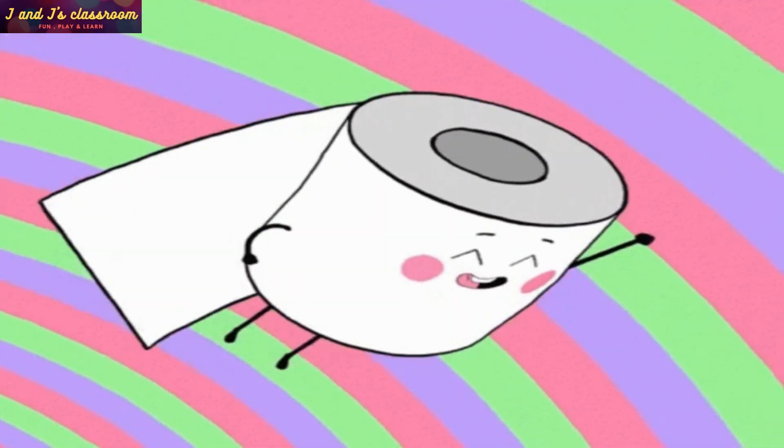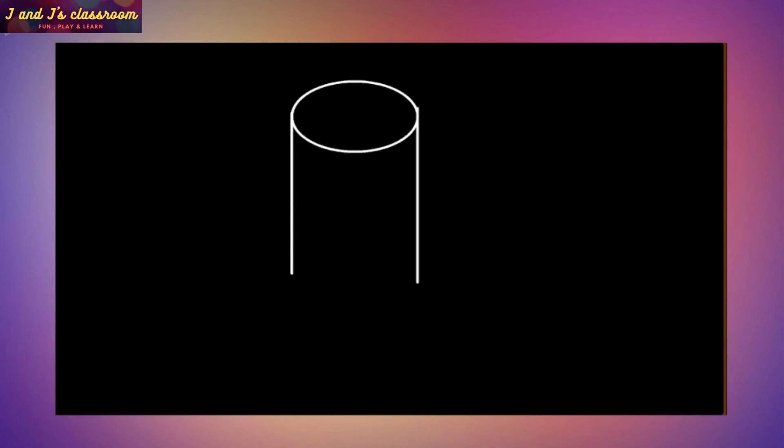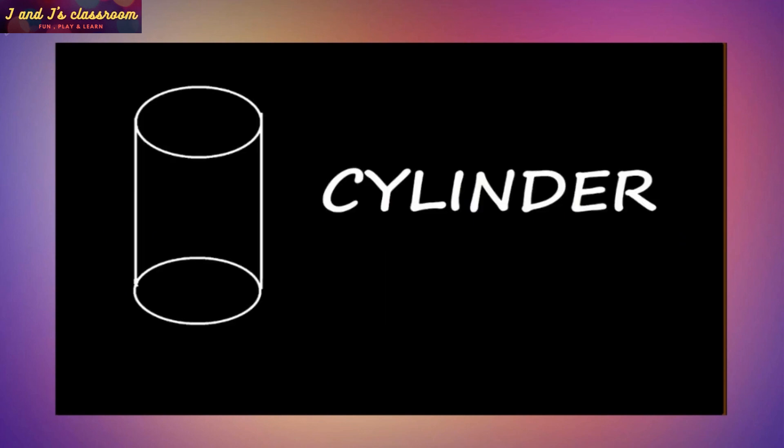Wow! To draw a cylinder, draw two ovals and join these two ovals with straight lines. Now what is it? Cylinder.